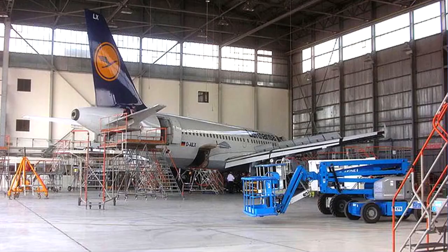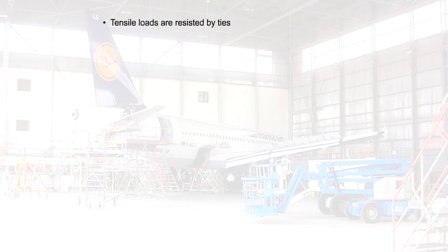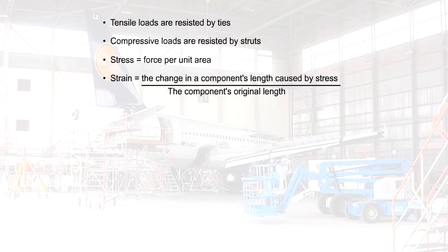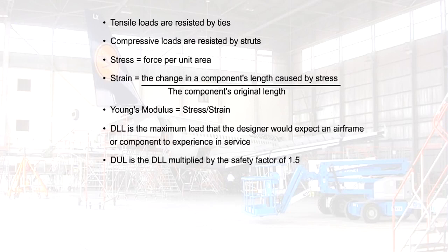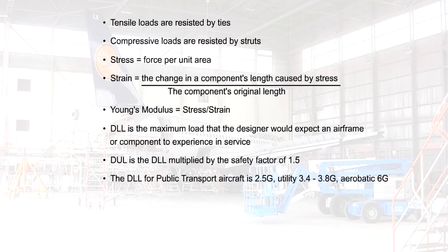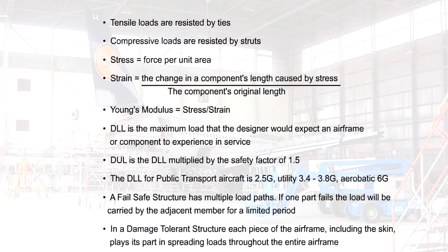This is the end of the lesson. You should now know that tensile loads are resisted by ties, that compressive loads are resisted by struts, and the meaning of the terms stress and strain. You should know the meaning of the term Young's modulus of elasticity, and you should also understand the relationship between design limit load and design ultimate load and the safety factor. You should also know what the design limit load is for various types of aircraft, and finally, you should understand the properties of fail-safe and damage-tolerant structures.